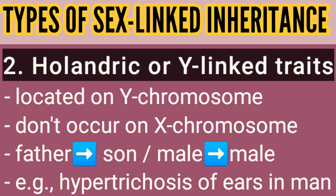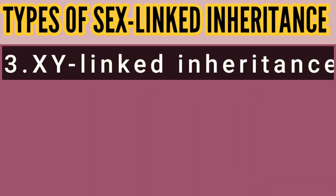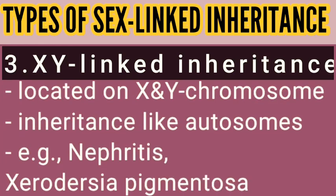Y-linked characters are inherited straight from father to son, i.e., male to male. An example is hypertrichosis of ears in men. Third, XY-linked inheritance: genes which occur in homologous sections of both X and Y chromosomes are called XY-linked genes and they follow XY-linked inheritance.